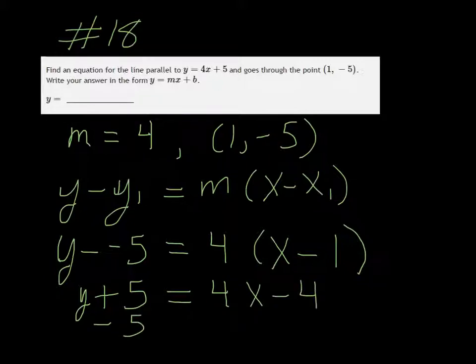We subtract 5 on both sides to get it in the right form, and we get that y is 4x minus 9.